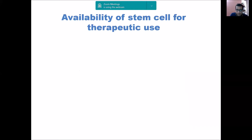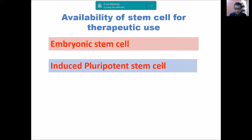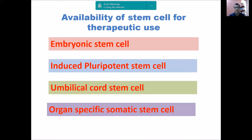Regarding the availability of stem cells for therapeutic use, the basic types that can be used — again from yesterday's discussion — include embryonic stem cells, induced pluripotent stem cells which have pluripotency like embryonic cells without the ethical dilemma of using embryos, umbilical cord stem cells which are a very good and practical source, and organ-specific somatic stem cells, that is adult stem cells.